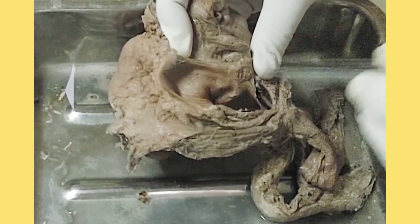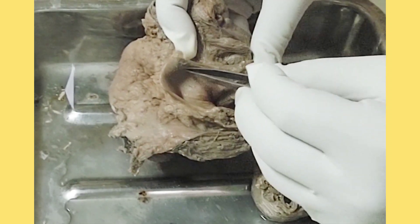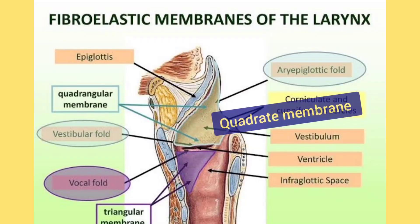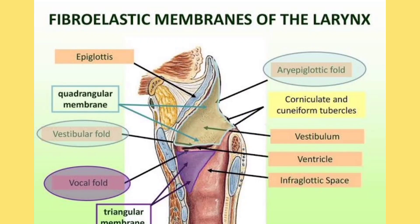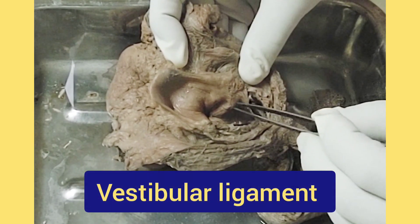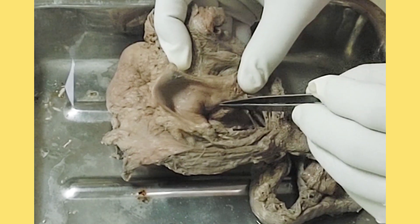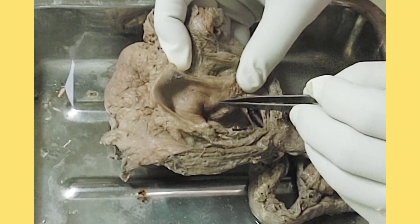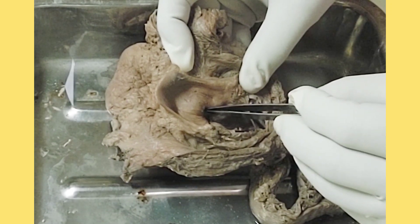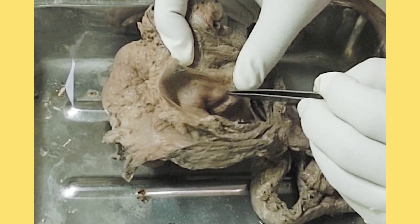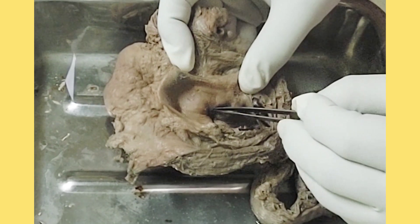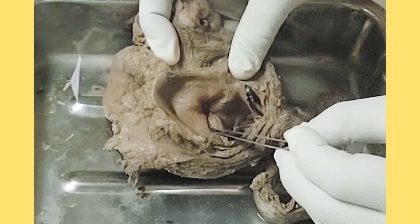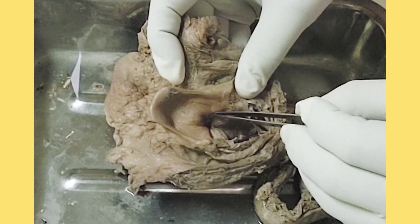What structures are deep to these folds? There is a membrane called the quadrate membrane. This quadrate membrane is quadrilateral in shape, extending from the lateral margin of the epiglottis up to the arytenoid cartilage, and the lower margin of the quadrate membrane is thickened to form the vestibular ligament. Deep to the vestibular fold, you will find the vestibular ligament, which is the thickened lower edge of the quadrate membrane extending from the arytenoid cartilage to the angle of the thyroid cartilage in front. On both sides you will find the vestibular ligament and vestibular fold.